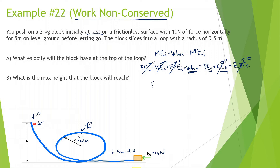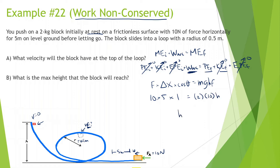Force times displacement times cosine of theta equals mgh final. Force is 10 times 5, and cosine of 0 is 1 because force and displacement go in the same direction, equals mass 2, gravity 10, and we're looking for h. So 50 divided by 20 gives us 2.5 meters.